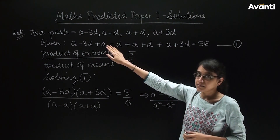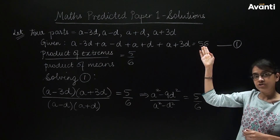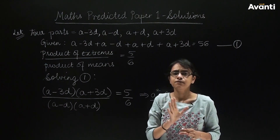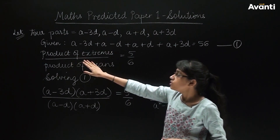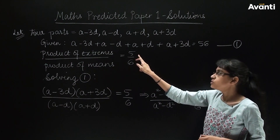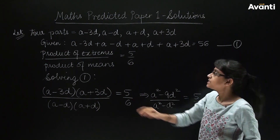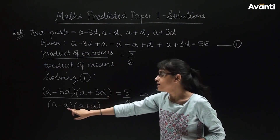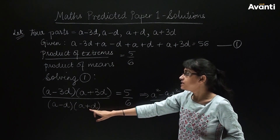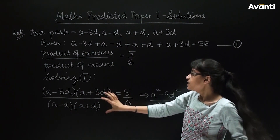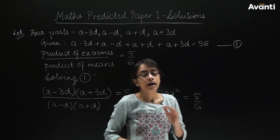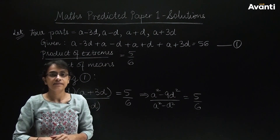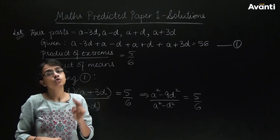We are given that the sum is 56. Writing this in equation form gives us our equation number 1. The second condition is about the 4 parts: the product of extremes, its ratio with the product of means, is equal to 5 by 6. So we have two extreme parts and we need to find the values of A and D. We will use both given conditions to solve this.